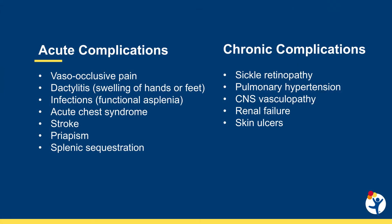Care of the patient with sickle cell disease is focused on prevention and management of acute and chronic complications. While sickle cell disease is primarily a blood disorder, it can cause complications in every organ system in the body. Acute complications include painful vaso-occlusive crises, infections due to functional asplenia, the acute chest syndrome, stroke, priapism, and splenic sequestration.